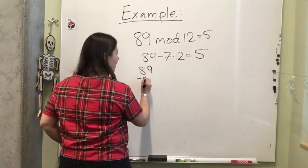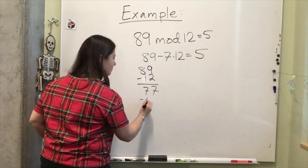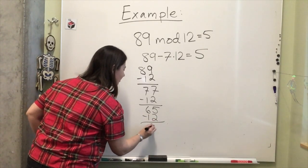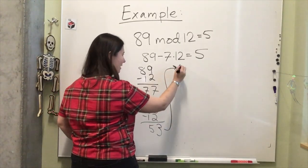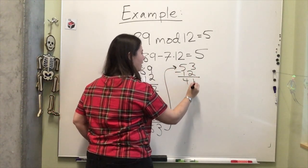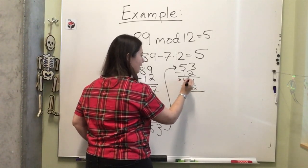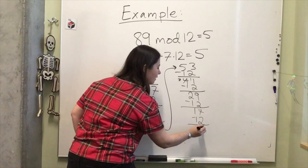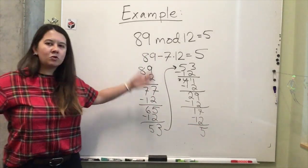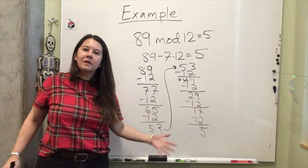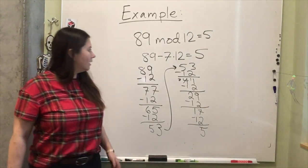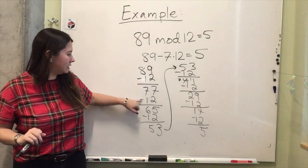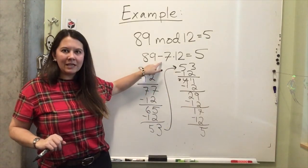Let's exhibit this by working it out. Starting with 89, we subtract 12 to get 77, then 65, then 53, then 41, then 29, then 17, then minus 12 gives us 5. If you just keep subtracting off 12s, you eventually arrive at the remainder. I subtracted 12 a total of 7 times — that was the 7 indicated in the equation 89 equals 7 times 12 plus 5.